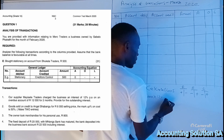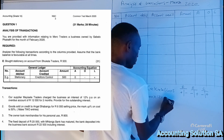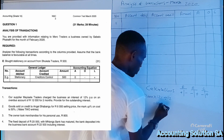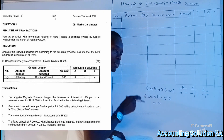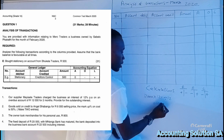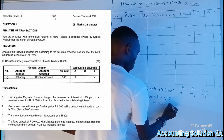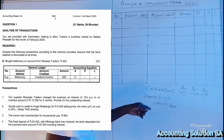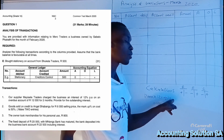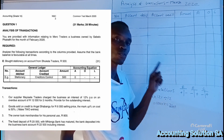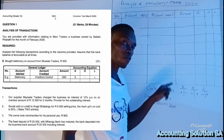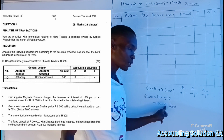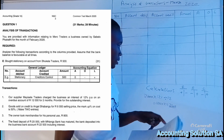We divide by 12 because our year has 12 months — the 12 percent is per year, so we divide to get a monthly amount. R12,000 × 12% ÷ 12 gives us R120 per month. Because they said it is due for two months, we multiply R120 by 2 to get R240 for two months.